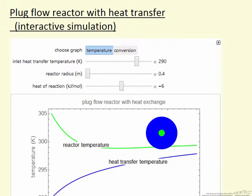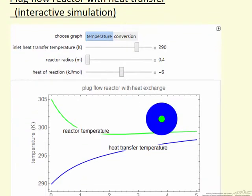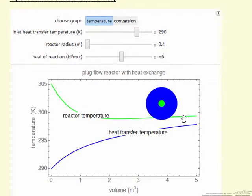In this interactive simulation on the left, we're looking at a plug flow reactor with heat transfer. The idea is that we have an annular reactor, so the picture here represents an end-on view. The green corresponds to the reactor size, and the blue is a large annular region where we're flowing heat transfer fluid.